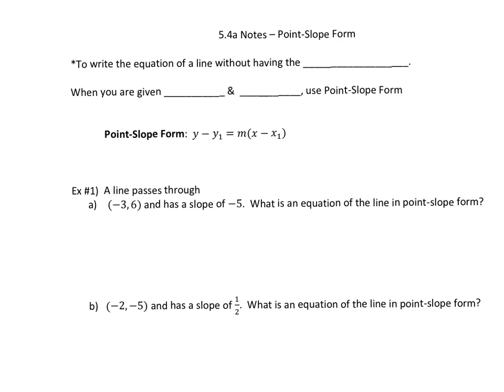Point-slope form looks a little bit different. When we were doing slope-intercept form, we had a slope and we had a y-intercept. This is what you use when you don't have the y-intercept. So when you get the equation of a line without having the y-intercept, you're going to use point-slope form.